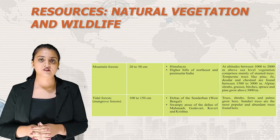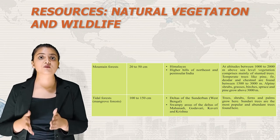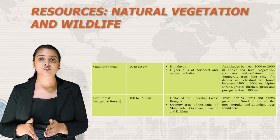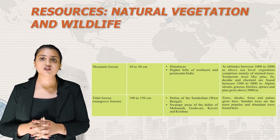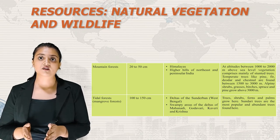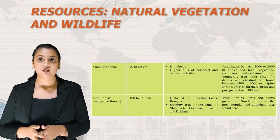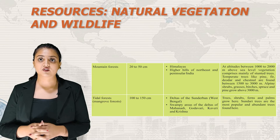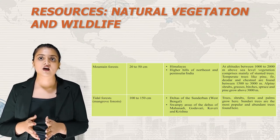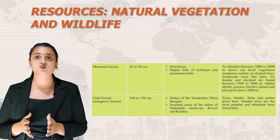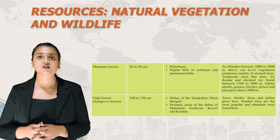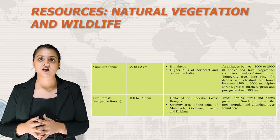Mountain Forest in India receives 20 to 50 cm of rainfall and is located in the Himalayas and higher hills of Northeast and Peninsular India. At altitudes between 1000 to 2000 m, vegetation comprises mainly stunted trees. Temperate trees like pine, fir, deodar and chestnut are found between 1500 to 3000 m. Alpine shrubs, grasses, birches, spruce and pine grow above 3000 m.